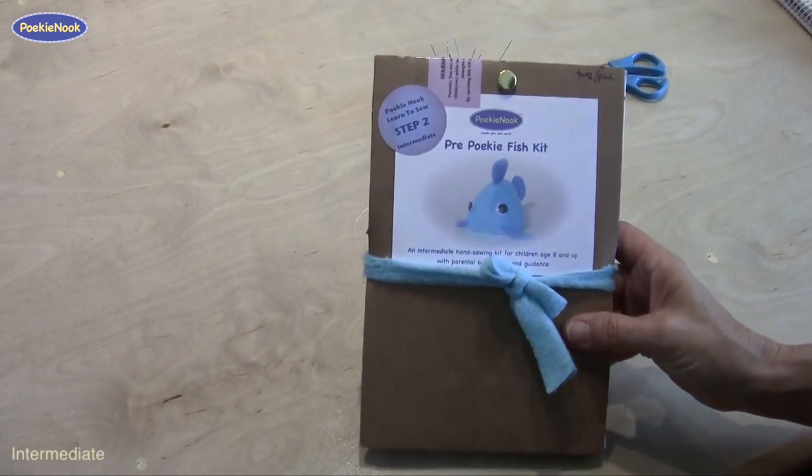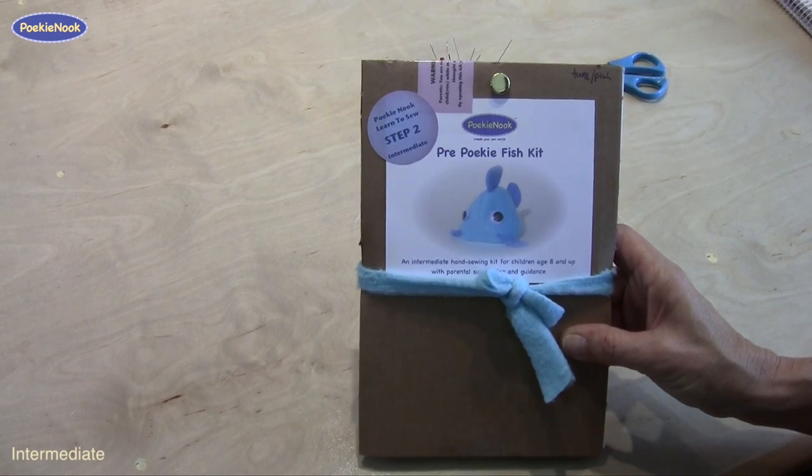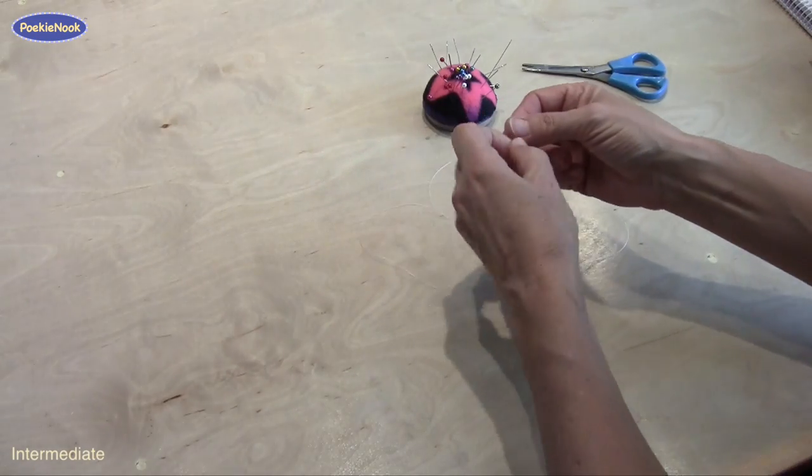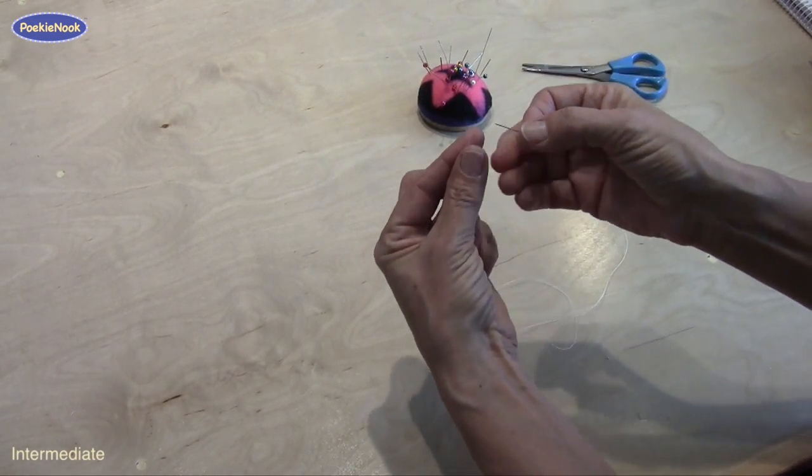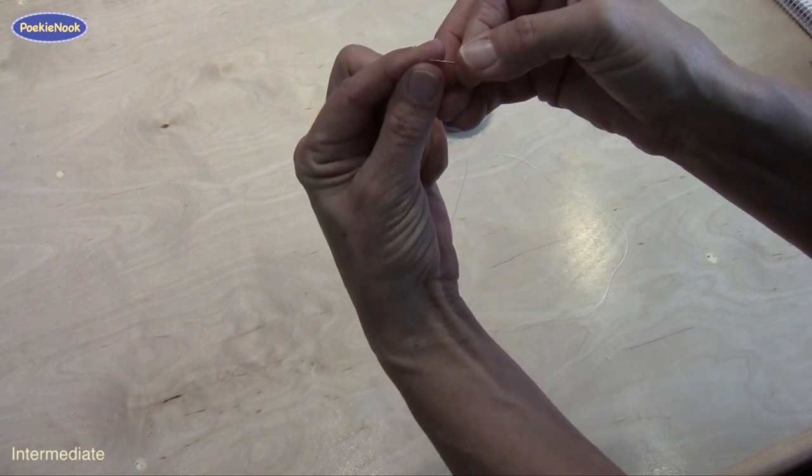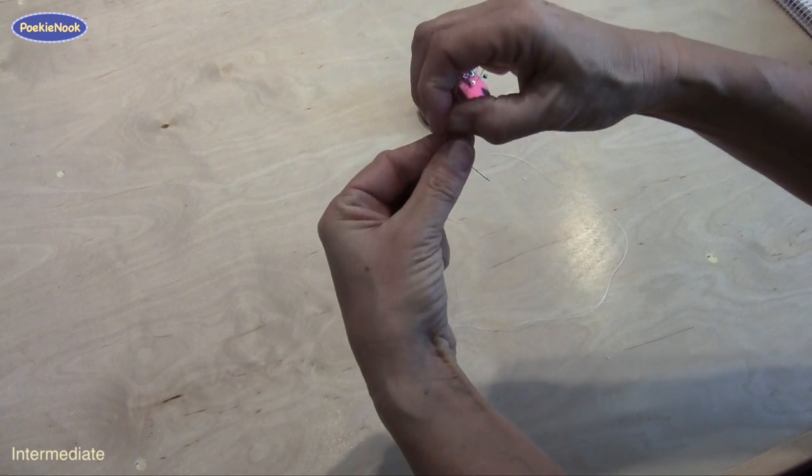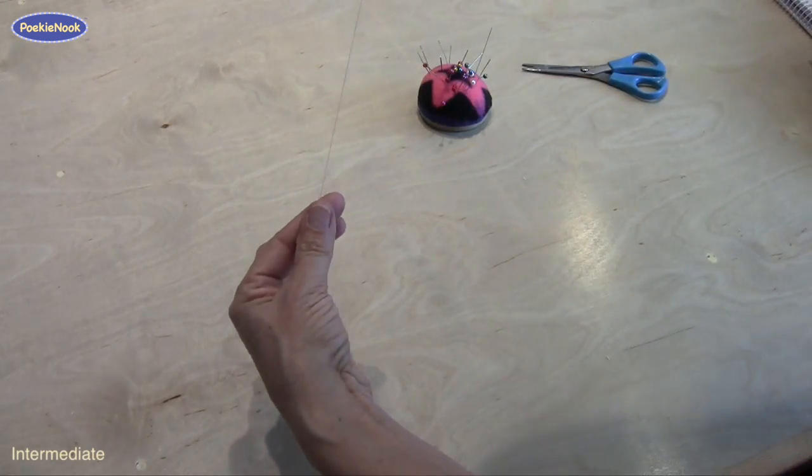For the intermediate kit, we use a skinnier thread and a smaller needle, but the thread we don't need to wet. We can just cut it to a sharp end, about arm's length, and then you take the needle, squeeze the thread in between your fingers and push the needle over the end of the thread. Again, having a short end and a long end.